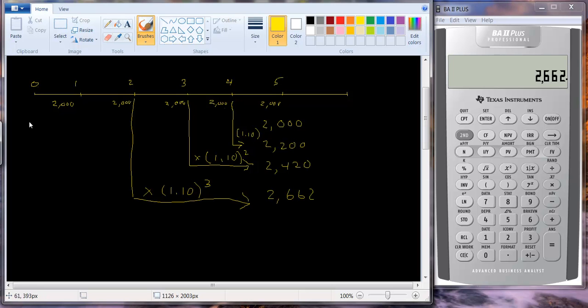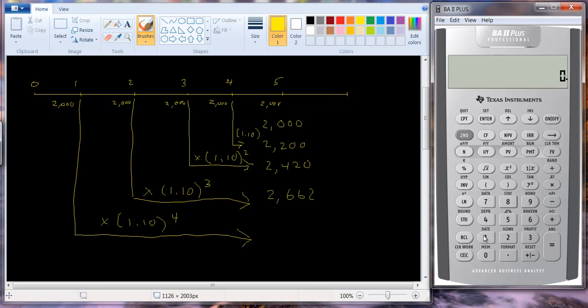And then our final cash flow here in year one is going to grow one, two, three, four periods. And so we have times 1.10 to the fourth. So 1.1, y to the x, raise it to the fourth, times $2,000. We get $2,928.20.